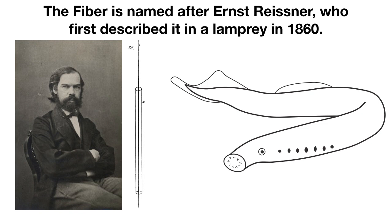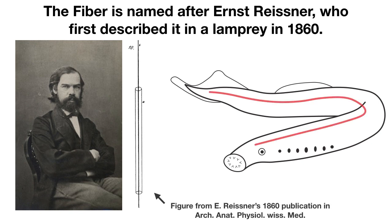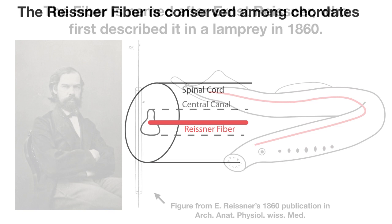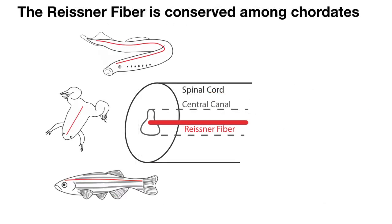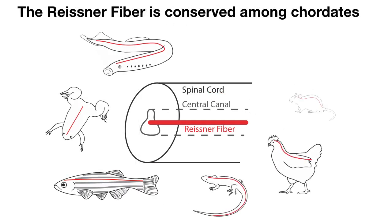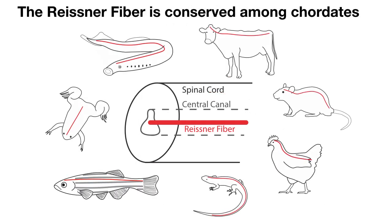The fiber is named after Ernst Reissner, who first described it in a lamprey in 1860. The Reissner fiber has been identified in many chordate species, ranging from sea squirts to mammals.